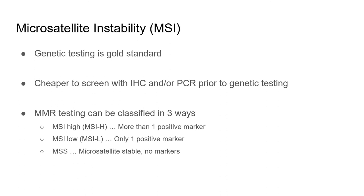MSI screening is done with either IHC or PCR. PCR has about 90% sensitivity, while IHC is about 85%. Some institutions will perform both, bringing the sensitivity close to 100%. The results are categorized as MSI-high (more than one mismatch repair enzyme is defective), MSI-low (only one mismatch repair enzyme is defective), or MSS (no mismatch repair enzymes are defective).